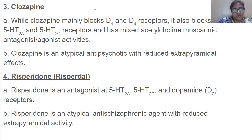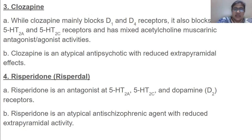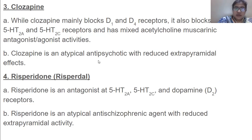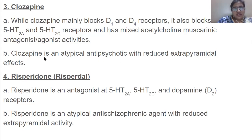Then we have clozapine. While clozapine mainly blocks D1 and D4 receptors, it also blocks 5-HT2A and 2C receptors and has mixed acetylcholine muscarinic antagonist activities. Clozapine is an atypical antipsychotic that reduces extrapyramidal effects — particularly tardive dyskinesia, where the person is not able to walk properly and limbs are not moving effectively. When taking clozapine, extrapyramidal effects are really, really reduced.